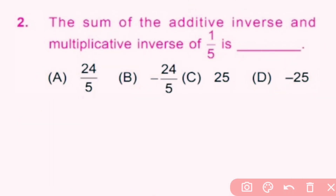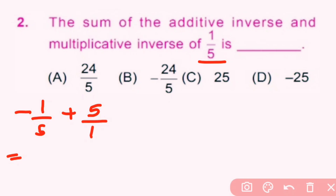Question 2: The sum of the additive inverse and multiplicative inverse of 1/5 is? The additive inverse of 1/5 is −1/5 and the multiplicative inverse of 1/5 is 5. We want their sum, but the denominators are not the same, so we multiply to make them equal.